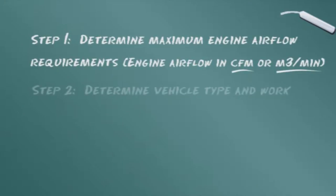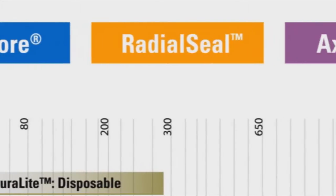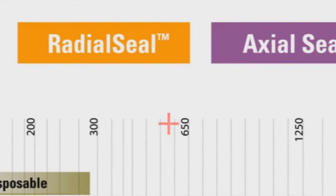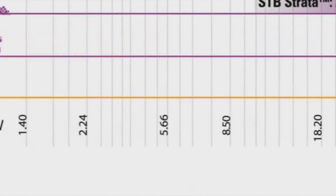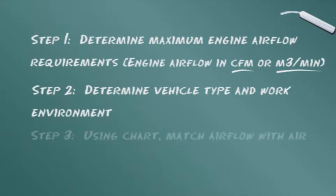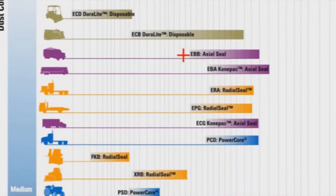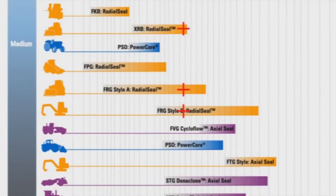The next step is to determine the type of vehicle and its environment — we're assuming that your vehicle operates in a medium dust environment. Now let's assume that the engine airflow requirement is 600 CFM, or its metric equivalent of 17 cubic meters per minute. As the third step, follow the line on the chart matching your airflow rate. In this case, in the medium dust environment, three air cleaner families meet the 600 CFM, or 17 cubic meters per minute requirement.